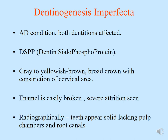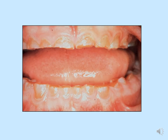Moving on to dentinogenesis imperfecta — imperfect formation of dentine. This is an autosomal dominant condition that affects both dentitions. The protein affected is dentine sialophosphoprotein. The teeth appear gray to yellowish brown with a broad crown and constriction of the cervical area. Enamel is easily broken with severe attrition. Radiographically, the teeth appear solid with obliterated pulp chambers and root canals. In this clinical picture, there is severe attrition of the maxillary and mandibular teeth with a deep yellow color; the enamel is entirely lost and the dentine is defective.